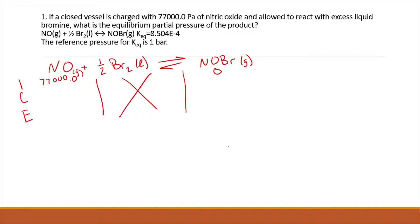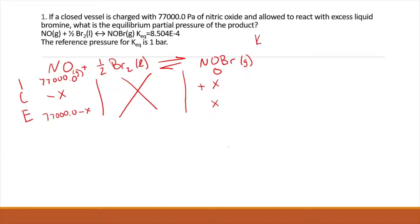We do initially have 77,000 pascals of NO. As the reaction goes, we know that we're gaining some X amount of NOBr and losing X amount of NO, using our stoichiometry. At equilibrium, we have X for NOBr and 77,000 minus X for NO. Using the reaction, we can write our equilibrium equation — the partial pressure of NOBr divided by the partial pressure of NO. That's all we care about: our reactants and products that are not pure, so NOBr and NO only.